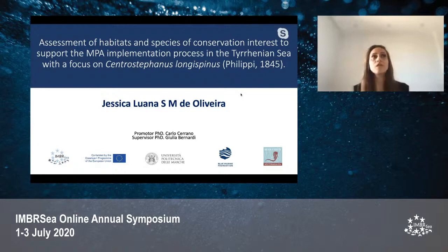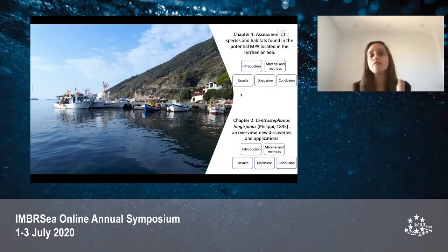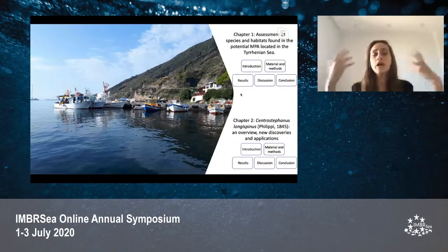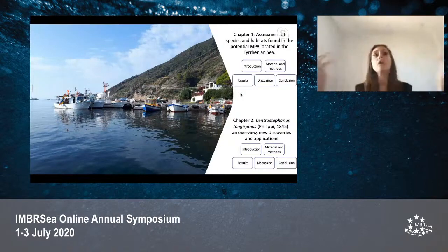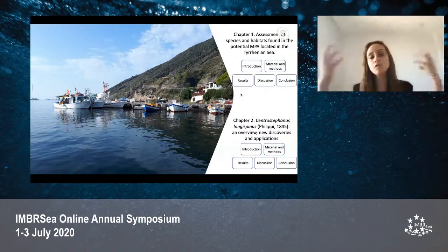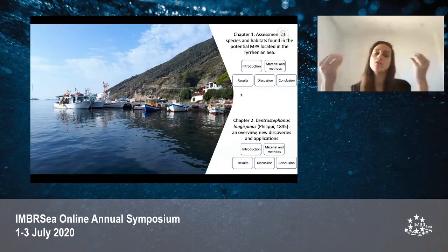The work was divided into two main chapters. Chapter one was based on the first research question: which marine habitats are present in the area that can support the establishment of an MPA? Chapter two focuses on the sea urchin Centrostephanus longispinus, based on the research question: among protected species, which one could be valorized to highlight the peculiar marine biodiversity of the area?